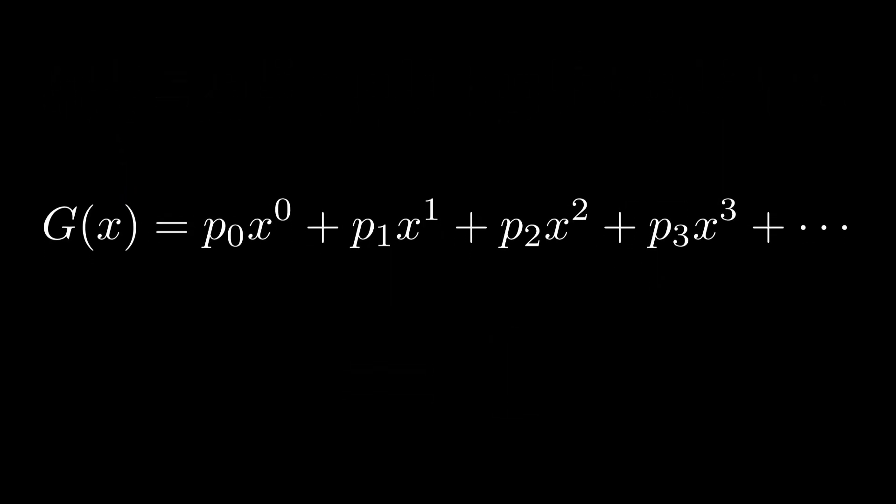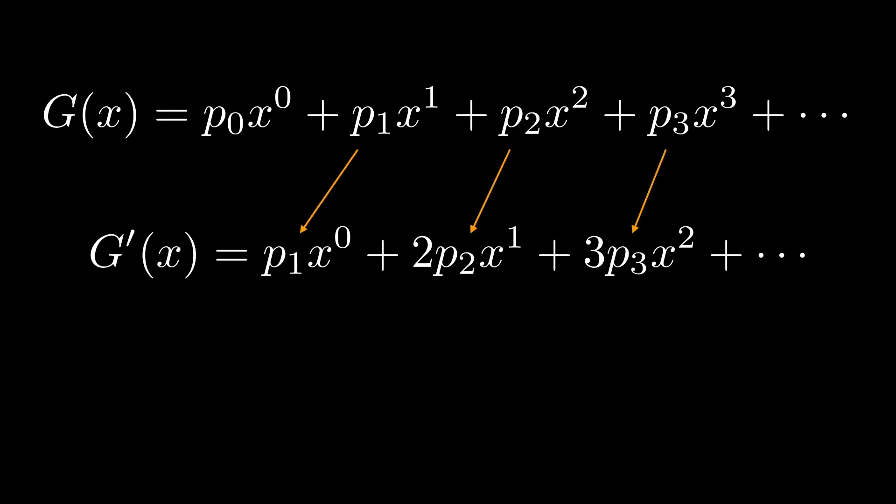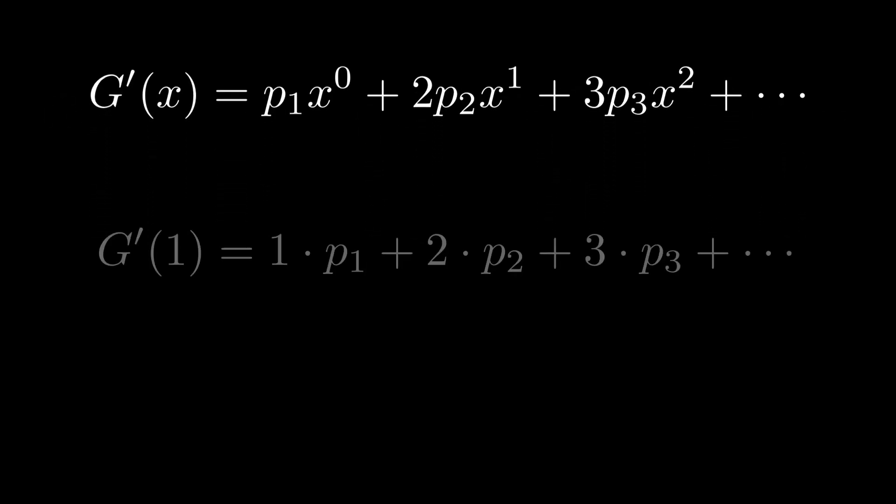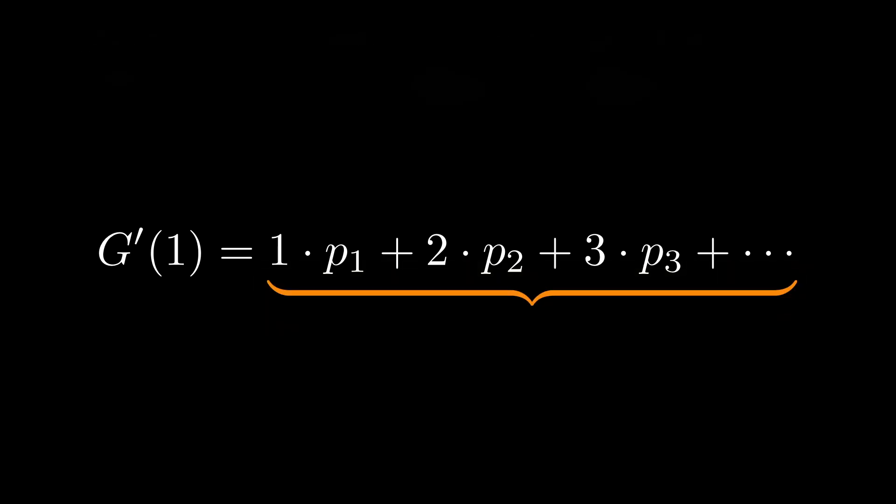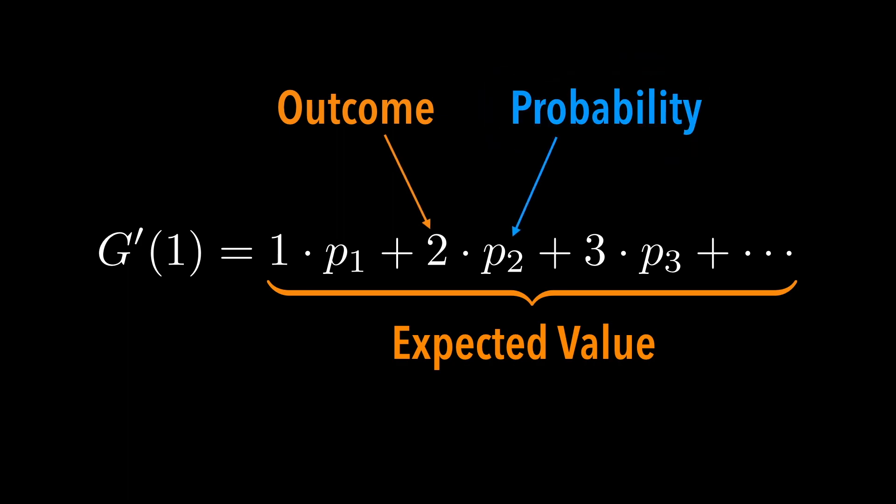Another nice operation is taking a derivative once and then plug 1 into x. And what is this formula? Yes, we have just calculated the expected value of the outcome by multiplying the outcome value with its probability and adding them up. That's the expected value.